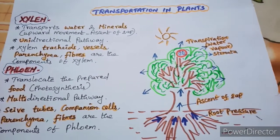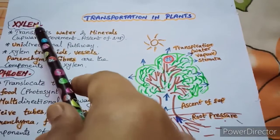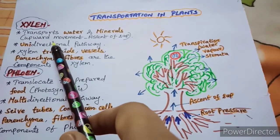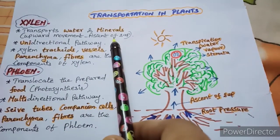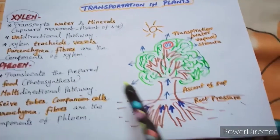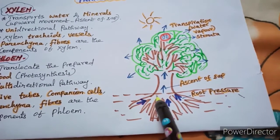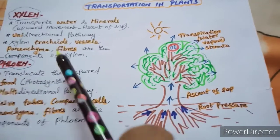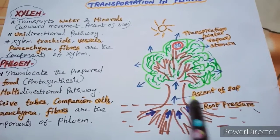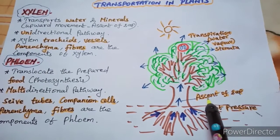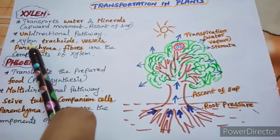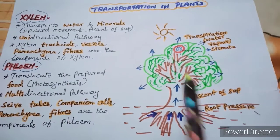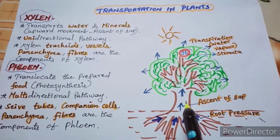Coming to transportation in plants, there are two types of components involved — namely xylem and phloem. Xylem transports water and minerals from the soil to different parts of the body, which is an upward movement called ascent of sap. It is a unidirectional pathway — from the soil, the root systems absorb water and minerals, which are carried by xylem components to different parts. The xylem components are xylem tracheids, xylem vessels, xylem parenchyma, and xylem fibers.